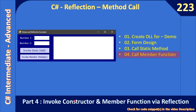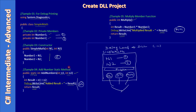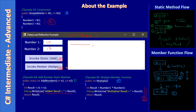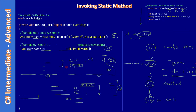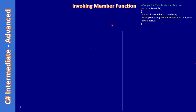We will see how to invoke the constructor, and then how to make a call to the member function via the instantiated object. Using reflection, we will load the assembly and perform the tasks one by one. In the first video we created the DLL for experiment purposes, then discussed the flow for static method and member function invocation. In the last video we invoked the static method and looked at the sequence. Once we have MethodInfo, the two key methods are GetMethod from type, then Invoke on the MethodInfo.